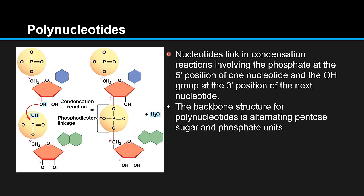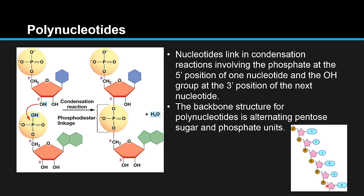Nucleotides link in condensation reactions involving the phosphate at the 5' position of one nucleotide and the OH group at the 3' position of the next nucleotide. The backbone structure for polynucleotides is alternating pentose sugar and phosphate units. The OH from one nucleotide and the H from the next are released as a molecule of water, forming a phosphodiester link. This gives the backbone structure with alternating sugar and phosphate units.